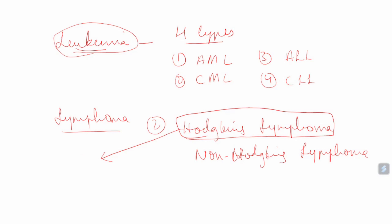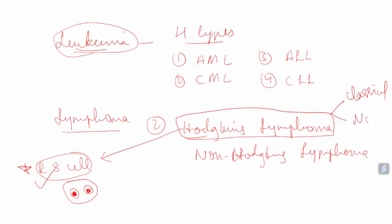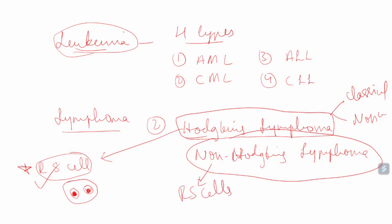Hodgkin's lymphoma is mainly characterized by Reed-Steinberg cells — RS cells. These are specialized macro cells having binucleates, two nuclei, and in the nucleus they have a dense nucleolus. That is a typical clinical feature for Hodgkin's lymphoma. The main difference between Hodgkin's and non-Hodgkin's lymphoma is that in non-Hodgkin's lymphoma there is no presence of Reed-Steinberg cells.